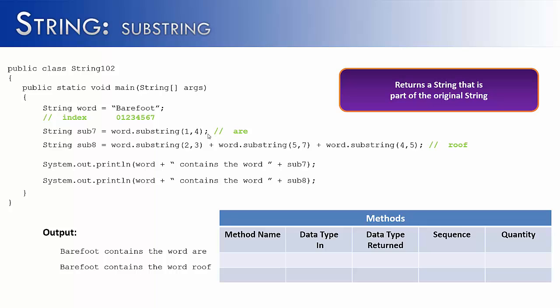Let's go ahead and summarize the method. Its name is substring. The data type in are two ints. It returns a string, and its sequence is the starting index and the ending index, which is exclusive. And the quantity is 2. Now I have a second line here, because remember, it's overloaded. And the overloaded method would look like this. The name would still be substring, but this one only takes in one argument. Its data returned is string. It doesn't have a sequence because it only has one value, and its quantity is only 1.